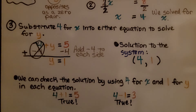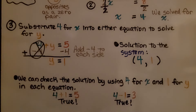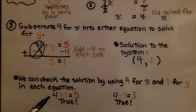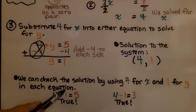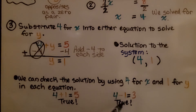The solution to the system is x equals four, y equals one. We can check the solution by substituting four for x and one for y in each equation. Instead of x plus y equals five, we have four plus one equals five — true. Instead of x minus y equals three, we have four minus one equals three — true.